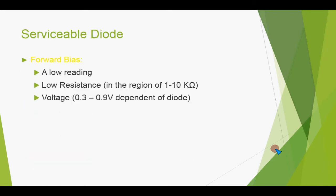If we find that the diode is serviceable, the indications on the digital multimeter in forward bias will be a very low resistance in the range of about 1 to 10 kilo ohms, and the voltage drop will be in the range of 0.3V for germanium diodes and 0.7V to 0.8 or 0.9V for silicon diodes, depending on the diode type.